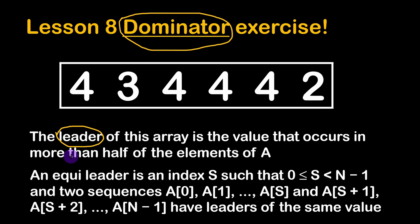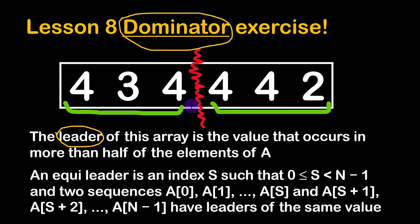An equileader is an index that splits the array into two parts with the same leader values on the left and right parts. For example, if we split this array at a certain point, we have a left part and a right part, and both parts have the same leader — the number four — because the number of occurrences of four is greater than half of the elements in each part.